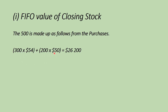When we add those two batches together we get the value of the closing stock. Feel free to pause the video and go back to see where the 300 and the 200 are coming from — understanding which purchases made up the 500 units helps clarify how we arrived at those prices. The value of the 500 units in closing stock using FIFO is 26,200.